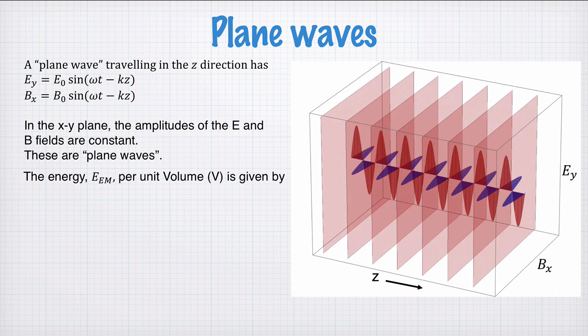The energy per unit volume is given by this equation here, half ε0E0 squared. We don't have to worry about the magnetic field component B here because the amount of energy in electric and magnetic fields is symmetric, so we've just wrapped it all up in terms of the value of the electric field here.